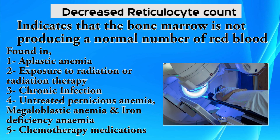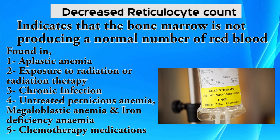Decreased reticulocyte count indicates that the bone marrow is not producing a normal number of red blood cells. This is found in aplastic anemia, exposure to radiation or radiation therapy, chronic infection, untreated pernicious anemia, megaloblastic anemia, iron deficiency anemia, and chemotherapy medication.